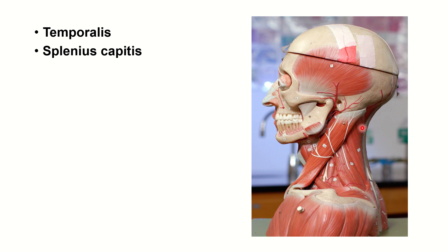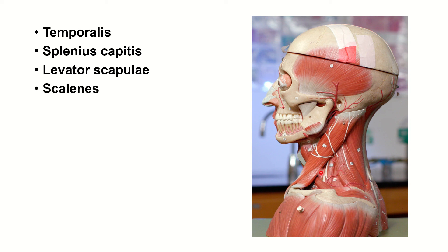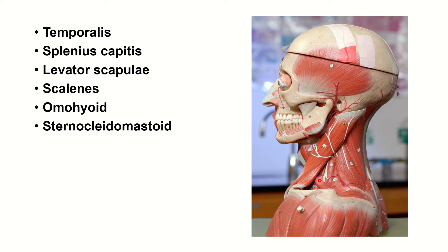Splenius capitis, levator scapulae. This is splenius capitis, this is splenius cervicis, and this is levator scapulae. These are the scalene muscles — posterior, intermediate, and anterior. Omohyoid: you can only see part of it here. Sternocleidomastoid.